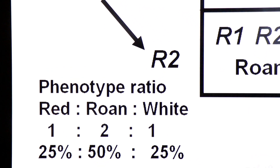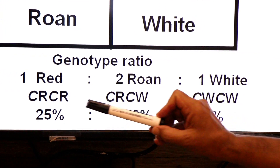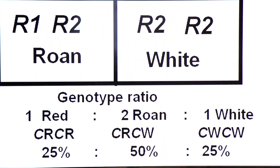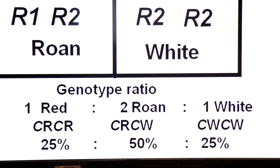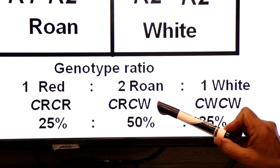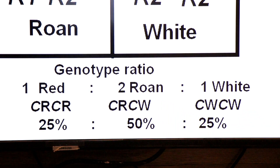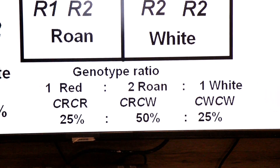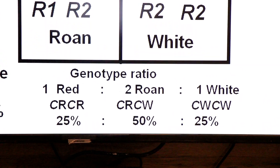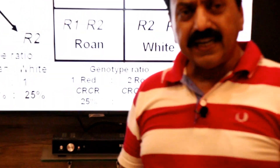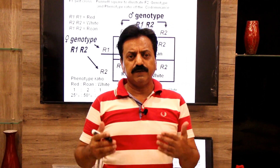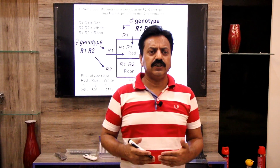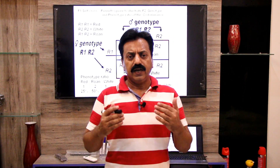Genotype ratio is also 1:2:1. Capital R1 capital R1 is dominant homozygous for red (25%). The two roan are dominant heterozygous — capital R1 capital R2 (50%). And the last genotype capital R2 capital R2 is dominant homozygous for white (25%). So the genotypic ratio is 1:2:1. जैसा कि हमने incomplete dominance में भी पड़ा था, in F2 generation phenotype and genotype ratios were same — 1:2:1. This is a similar case in codominance: F2 generation shows both phenotypic and genotypic ratio as 1:2:1।